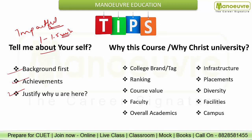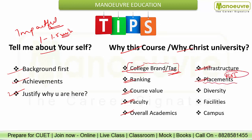If they ask why this course and why Christ University, tell them first about the college brand and the college tag — what it will create for you. Then tell them about the ranking of Christ, what exactly the course value is, about the faculty, overall academics, various events, functions, infrastructure, and placements. You can also talk about the ROI, as Christ University is expensive but will give great packages and a good return on investment. Talk about the diversity of courses, facilities offered, the campus — why this particular campus, why Bangalore instead of Delhi or Pune. Cover all these particular points.